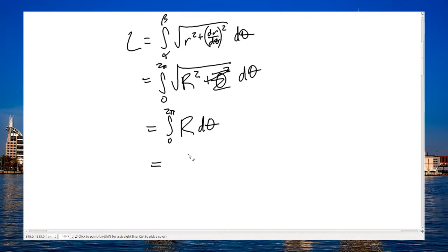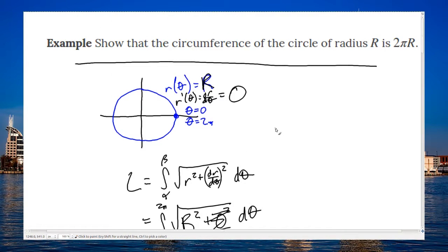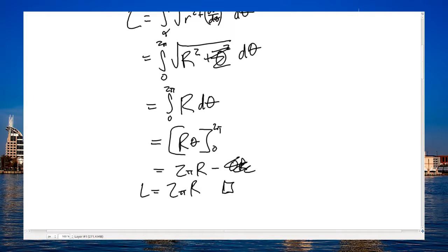But that's of course just R theta from 0 to 2 pi, 2 pi r minus 0 r. There is our proof here, so length is equal to 2 pi r. That finishes my proof. So that was of course easy. It makes sense that we're just doing a simple circle, so finding that circumference was not too bad. Let's take a look at one more example.